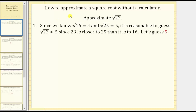Let's begin by approximating the square root of 23. Since we know the square root of 16 equals 4, because 4 squared equals 16, and the square root of 25 equals 5, because 5 squared equals 25, it is reasonable to guess the square root of 23 is approximately 5, since 23 is closer to 25 than it is to 16. Let's let the first approximation of the square root of 23 be equal to 5.